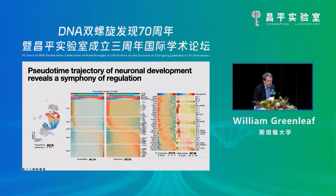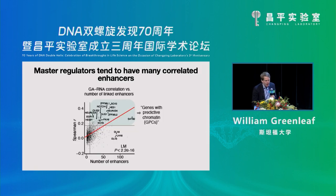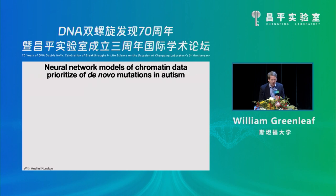We can also nominate which motifs are driving changes across this pseudotime trajectory, and look at the expression of specific genes expressing proteins that bind to those motifs — which we nominate as the actual causal elements driving this expression. We also see that transcription factors driving lineage-deciding fates tend to have lots of enhancers associated with them, and those enhancers correlate well with their gene expression, suggesting these lineage-defining factors are highly regulated with lots of enhancers to concertedly control when they turn on.